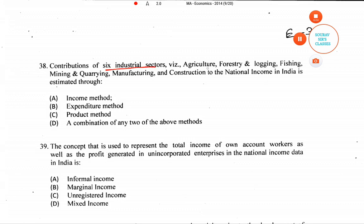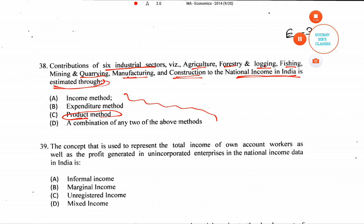Question number 37/38: the contribution of six industrial sectors — agriculture, forestry, logging, fishing, mining and quarrying, manufacturing, and construction — to national income in India is estimated through the product method. The right answer is option C.